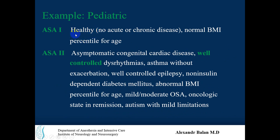For pediatric patients: ASA 1 is a healthy patient with normal body mass index. ASA 2 includes asymptomatic congenital cardiac disease, well-controlled dysrhythmia, asthma without exacerbation, well-controlled epilepsy, well-controlled non-insulin-dependent diabetes, abnormal body mass index percentile for age, oncologic state in remission, and autism with mild limitations — everything is mild or well-controlled.